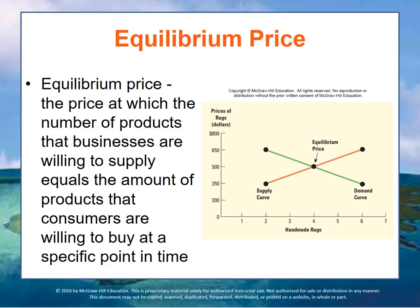Consumers may be willing to buy six rugs at $350 each, four at $500 each, but only one at $650. The relationship between the price and the number of rugs that consumers are willing to buy can be graphically shown here with a demand curve.